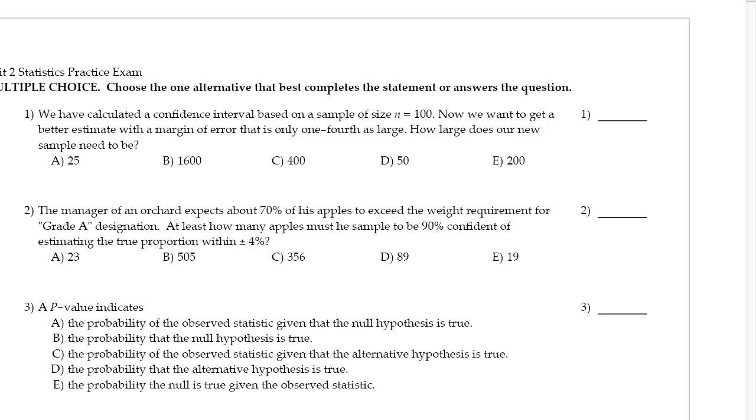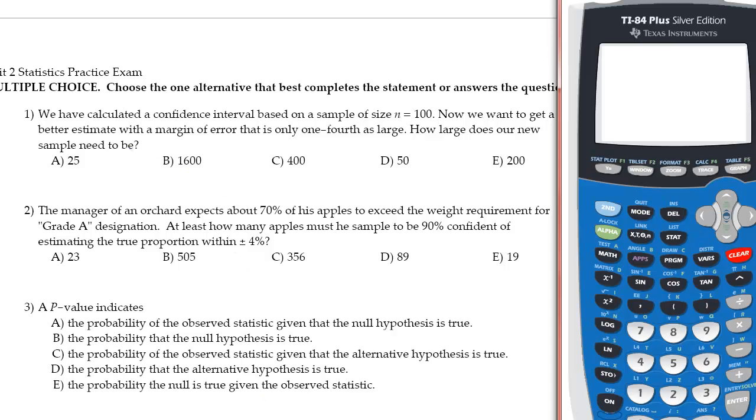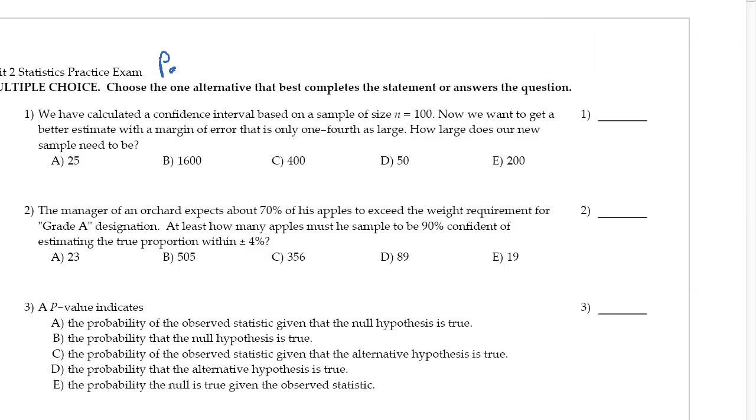Okay, so here is our practice exam. This is going to be part one of the video. What we've done here is we have calculated a confidence interval based on a sample size of n equals 100. And now we want to get a better estimate with a margin of error that is only one-fourth as large, so 0.25 as large. How large does our new sample need to be?